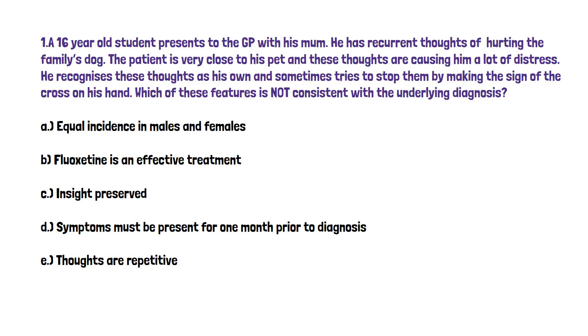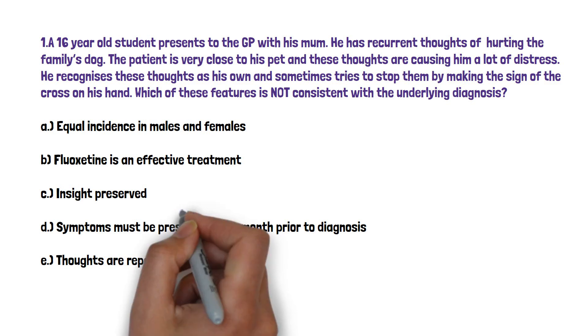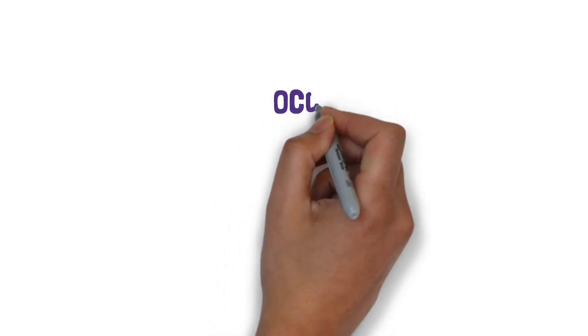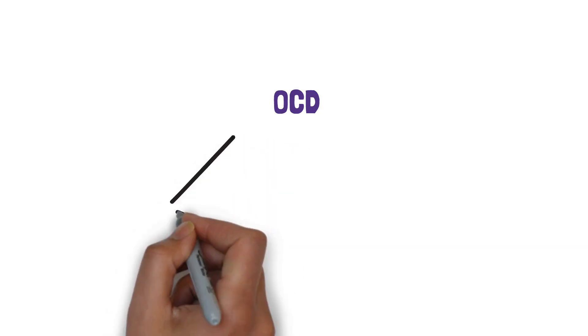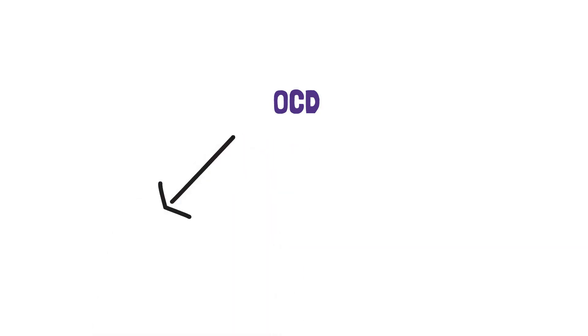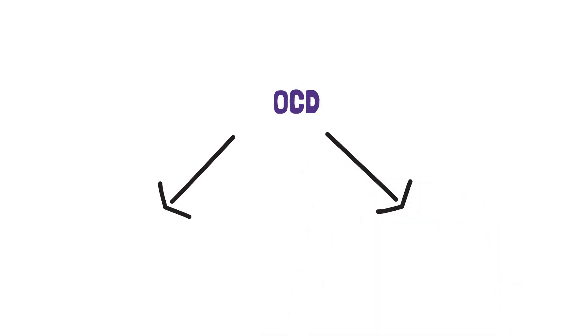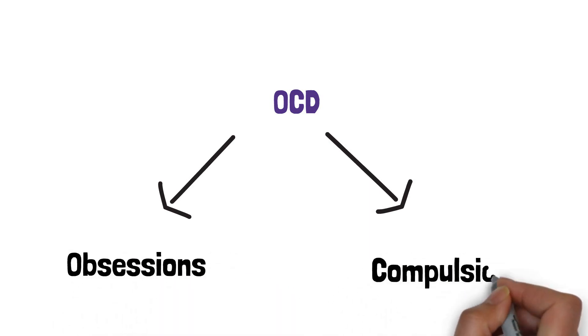Okay so the answer here is D. The patient in this question has obsessive compulsive disorder. And this can be predominantly obsessive thoughts, in this case thoughts of hurting the family's dog, or predominantly compulsive acts such as making the sign of the cross on the hand, or it can be mixed obsessional thoughts and acts as we can see in this case.